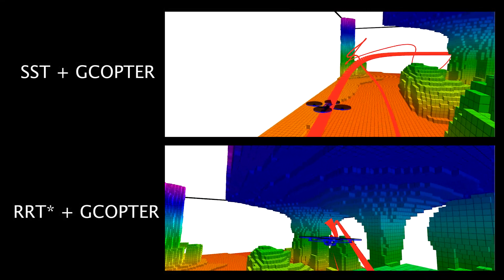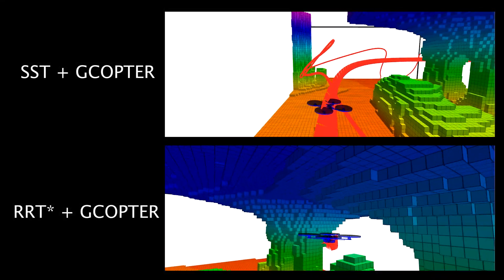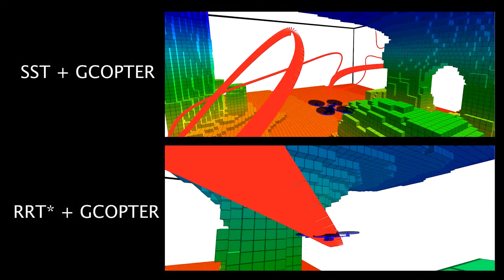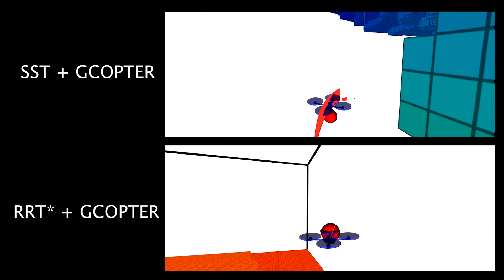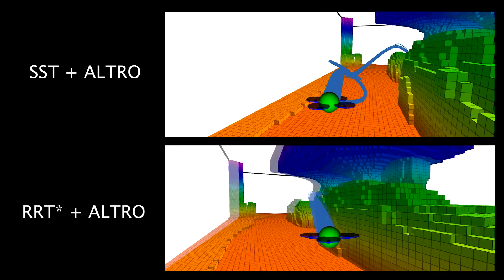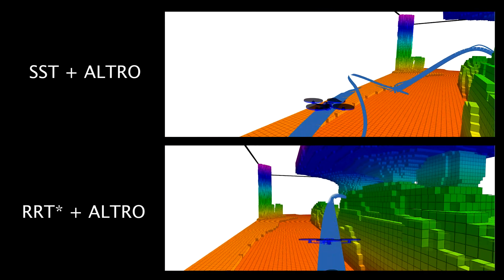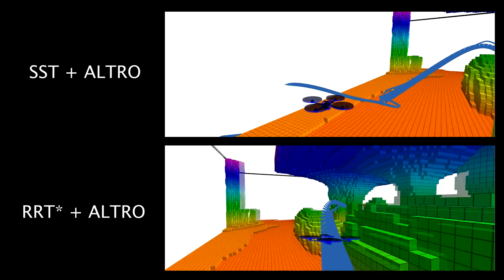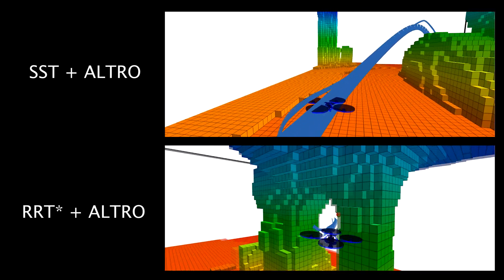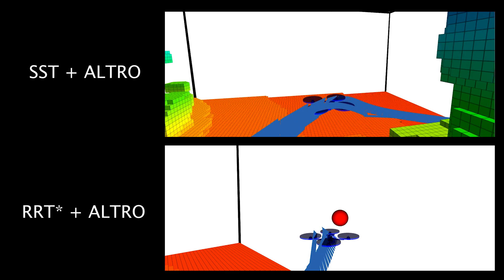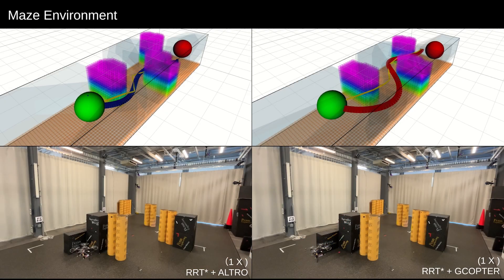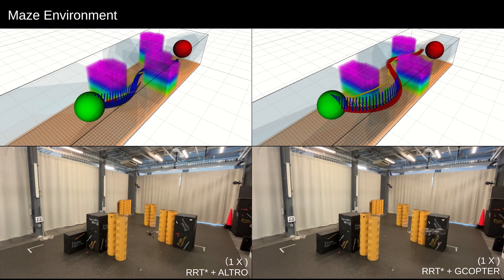Here, we identify a scenario where a higher-fidelity front-end is problematic. SST plans in input space, making finding a short and direct solution difficult. On the other hand, RRT-STAR, operating in just 3D, plans a much more direct path. We also exemplify the differences between back-end planners here using real experiments.